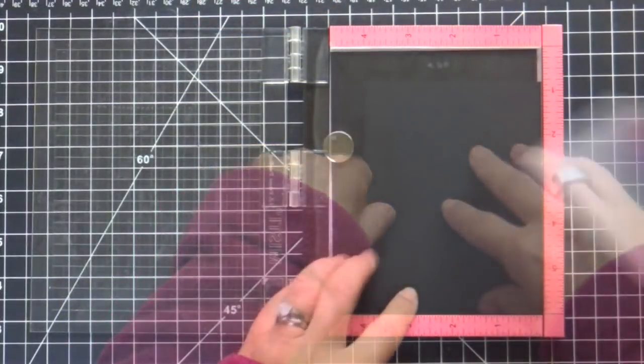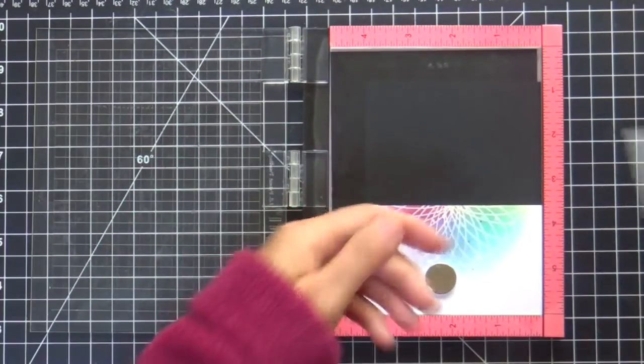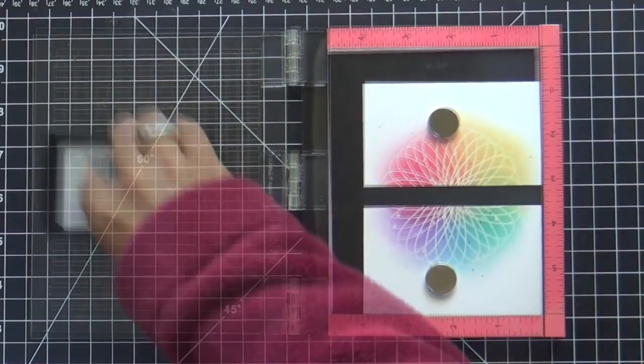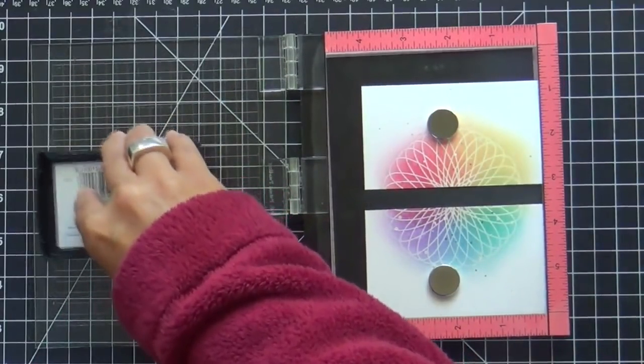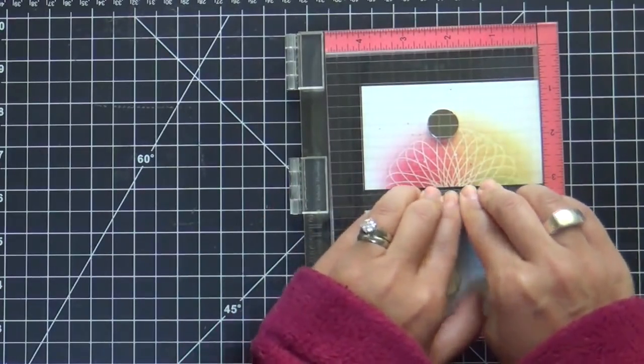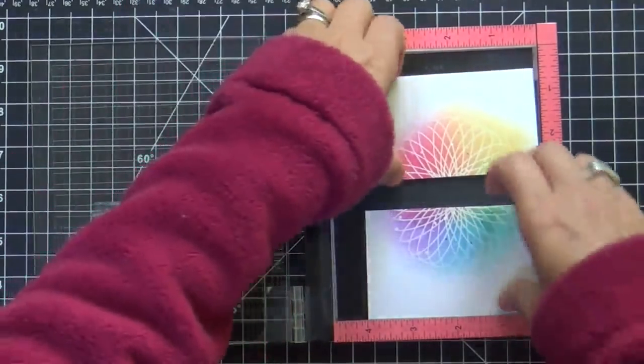I've got my black cardstock here. I'm taking my MISTI to line this all up so I know exactly where I want to emboss my sentiment. Once I got everything lined up with the magnets, I'm inking up my sentiment with Versamark ink and stamping it down. The great thing about the MISTI is you get perfect placement every time.